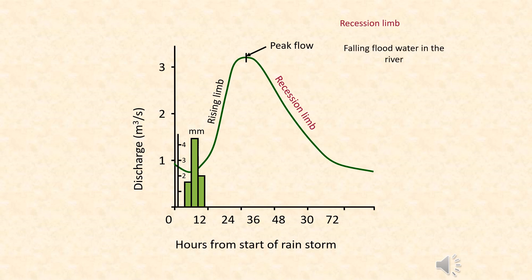After the peak flow, we then get the receding or recession limb. This is the falling level of water inside the river, after most of it has exited the channel and drained into a sea or into a lake.